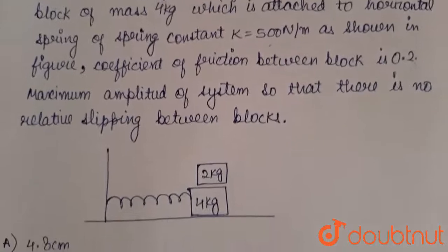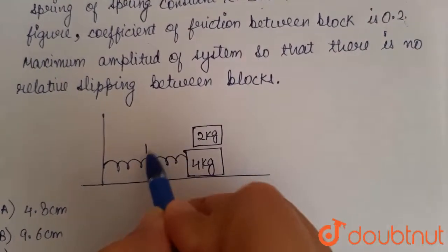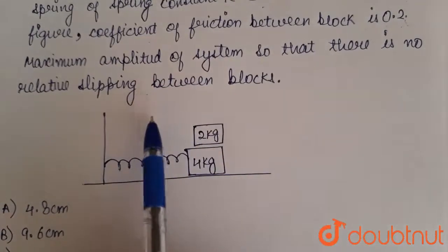So this is the diagram which is given to us. In this, we have a spring of constant K. And these are the two blocks which are moving together as there is no relative slipping between the blocks.